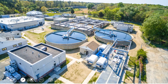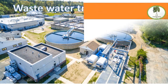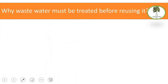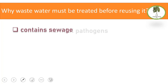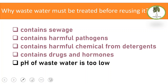This is a wastewater treatment plant — from its name, it treats sewage water. Why must wastewater be treated before reusing it? Because it contains harmful pathogens from feces, harmful chemicals from household detergents, drugs and hormones, and the pH of the wastewater is too low. So this wastewater must be treated before reusing it in agriculture or other applications.